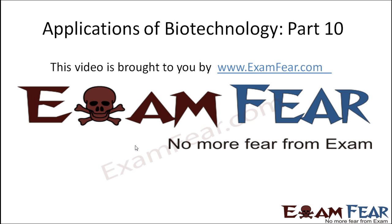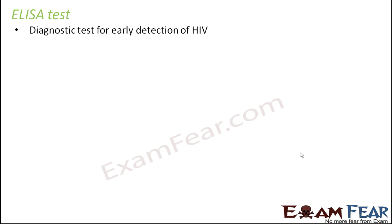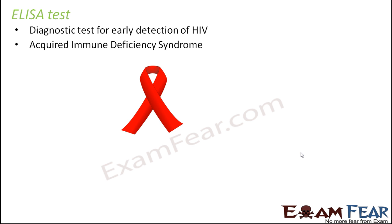Hello friends. This video on applications of biotechnology part 10 is brought to you by examfear.com. The next test is ELISA test. This is a diagnostic test for early detection of HIV. AIDS does not have a complete cure as of now, but if it is detected at a very early stage, the longevity of the patient can be increased because you can give the patient some antiretroviral drugs so that the symptoms of the disease can at least be reduced. So this test is for AIDS, which is acquired immune deficiency syndrome.